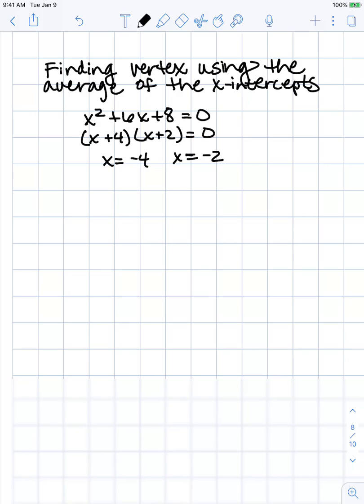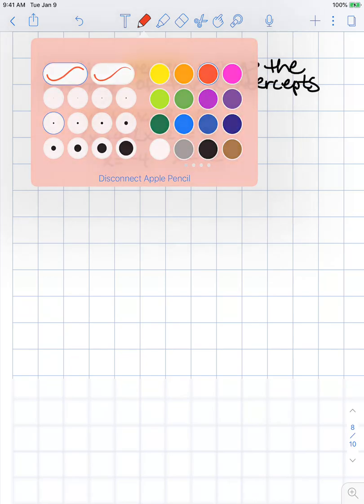We're going to find the vertex of a parabola by finding the average of the x-intercepts. I've taken my polynomial x² + 6x + 8 = 0 and factored it.